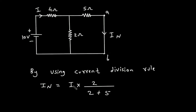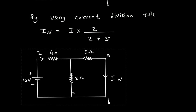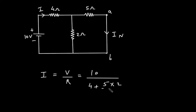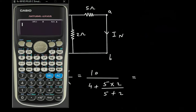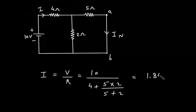So to find In, we have to first find total current I. We can find total current I by using Ohm's law. I is equal to V by R. V is 10 volt, and R is 4 plus 5 ohm parallel with 2 ohm, so 5 into 2 divided by 5 plus 2. So this will be 10 divided by 4 plus 5 into 2 divided by 5 plus 2. It is 1.84 ampere.